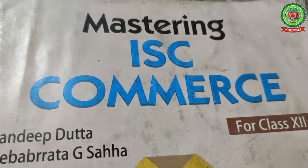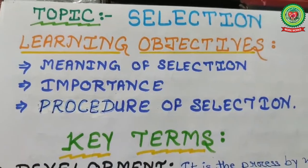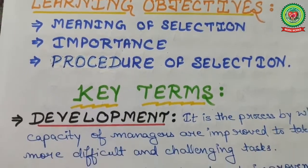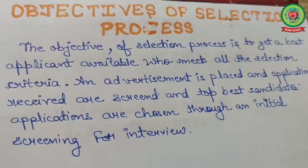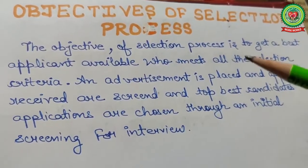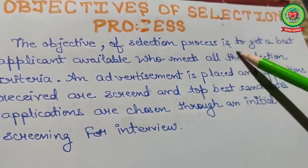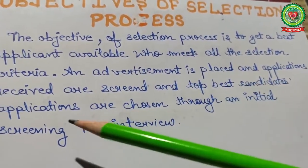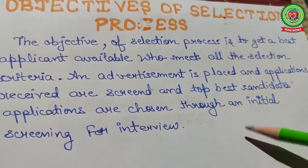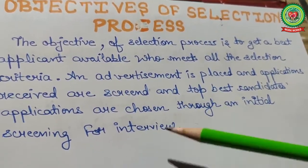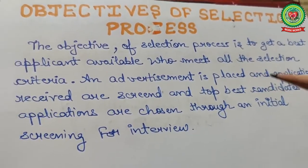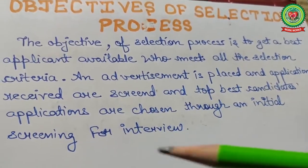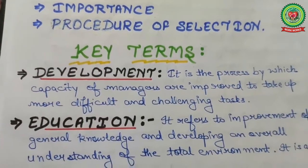Today's topic is Selection. The learning objectives are: the meaning of selection, its importance, and the procedure of selection. The main objective of the selection process is to get the best applicant available who meets all the selection criteria. Advertisements are placed, applications received are screened, and the top candidates' applications are chosen through initial screening for interview.